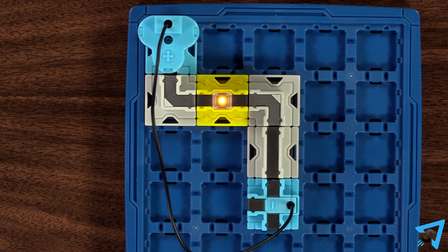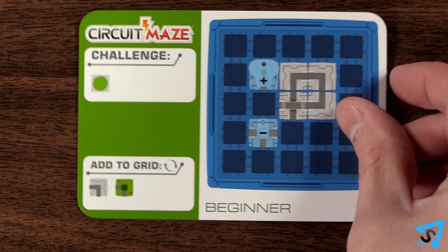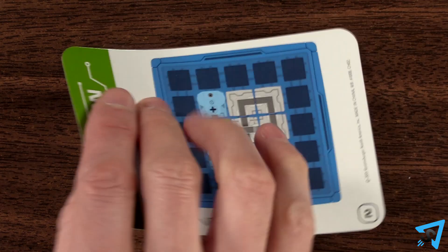Complete the circuit while lighting up all the beacons, without any short circuits, to win the challenge card and advance to the next one. On the back of each card is its solution.